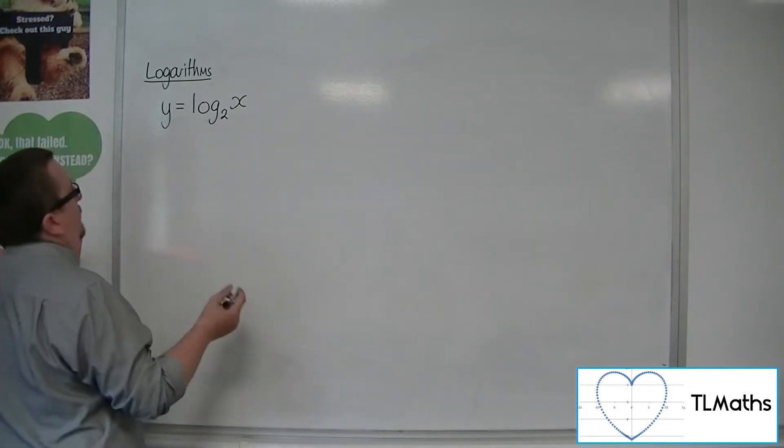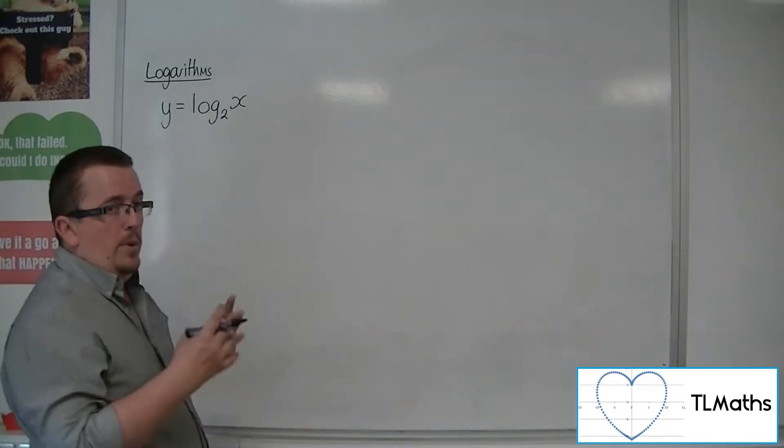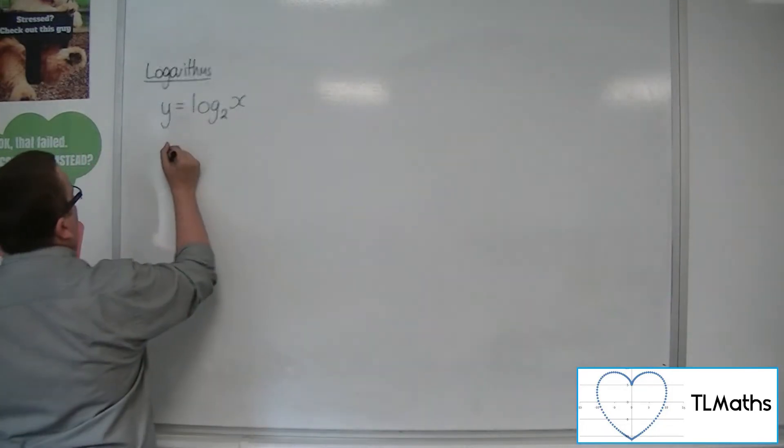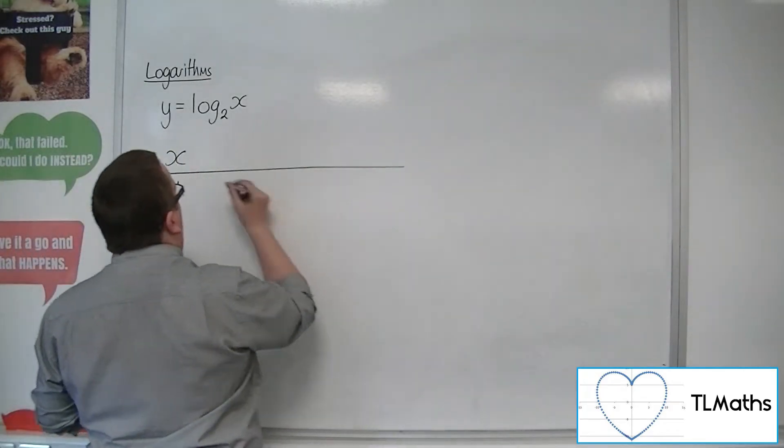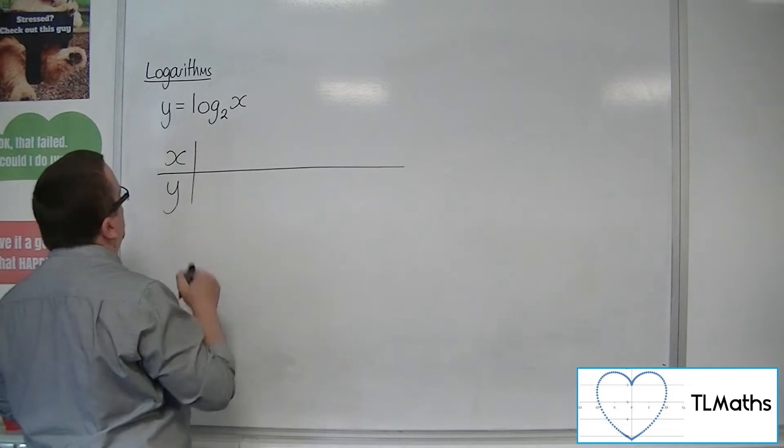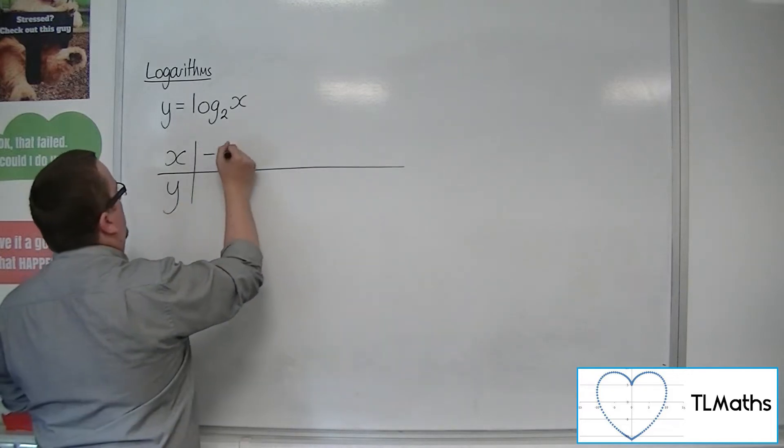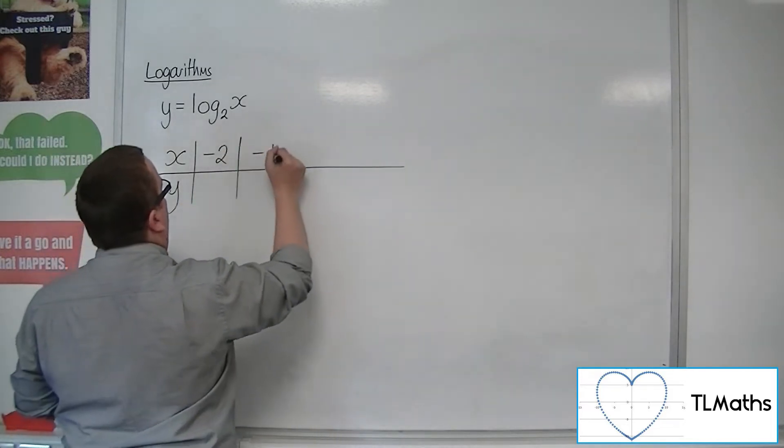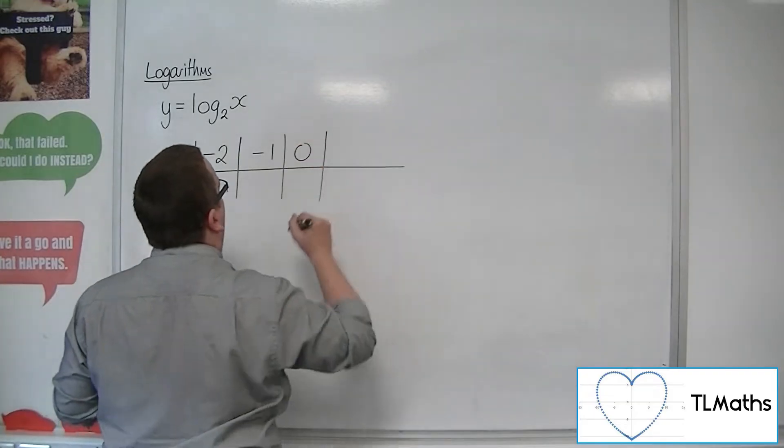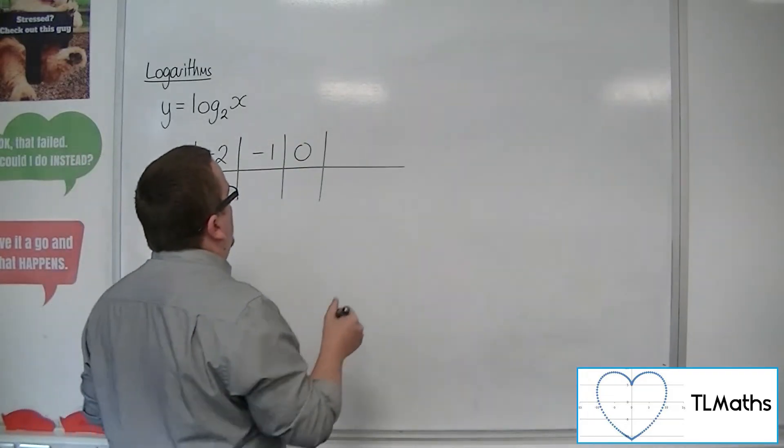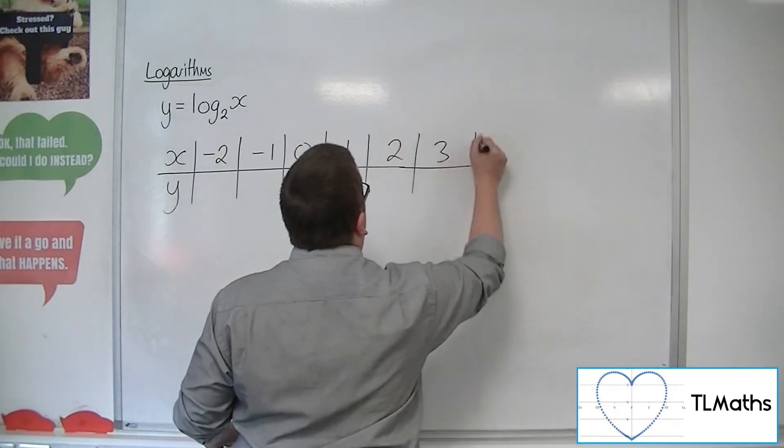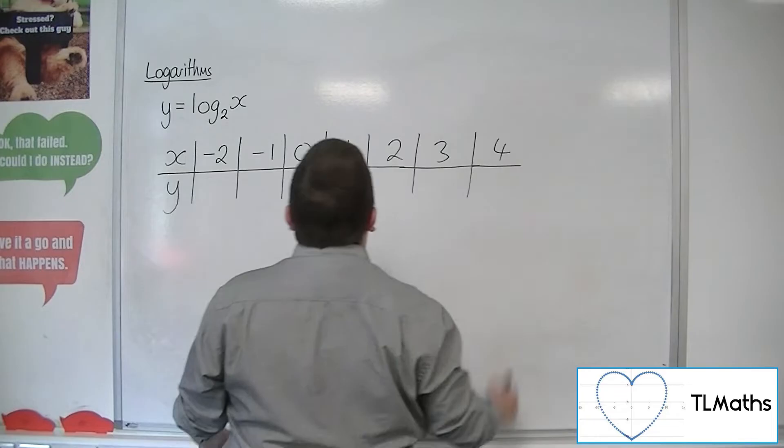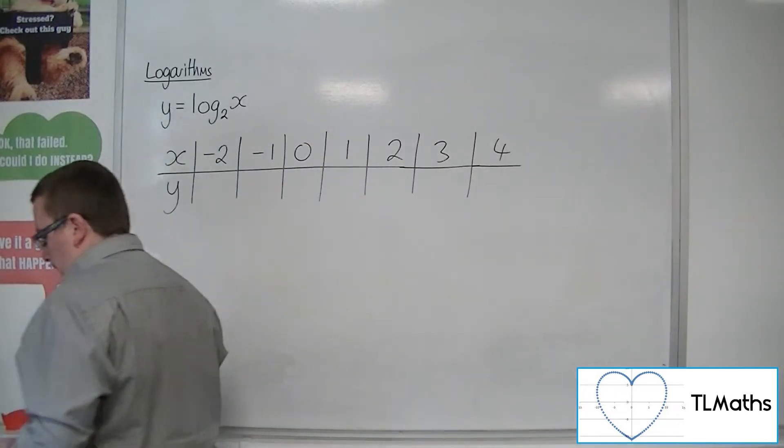So let's start with building up a table. Now, what values shall I choose? Well, it makes sense for me to choose something like minus 2, minus 1, 0, let's go in with 1, let's go 2, let's go 3, let's go 4. Okay, so let's start with this.